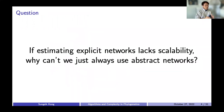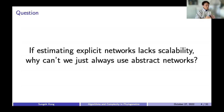This leads to the question: if estimating explicit networks lacks scalability, why can't we just always use abstract networks? This was in fact the main question I had for my master's thesis. I approached this question in two different ways — philosophically and using empirical data sets — using one of the most popularly used abstract networks called the median joining network.